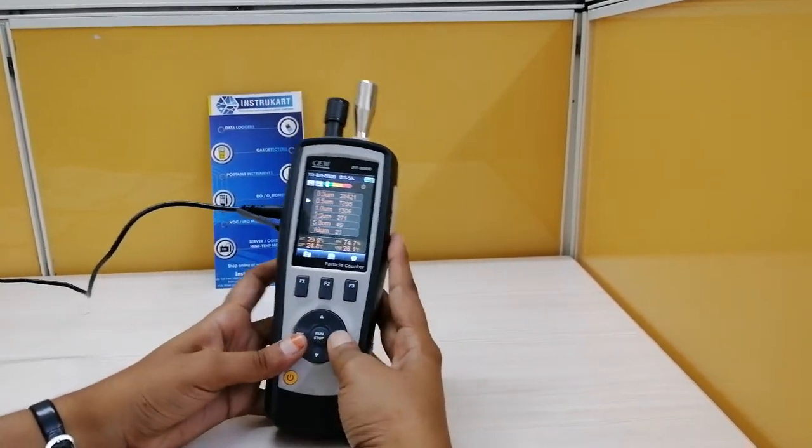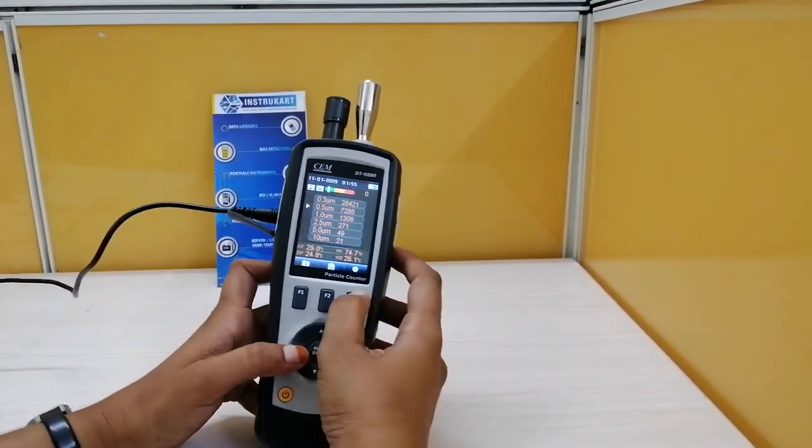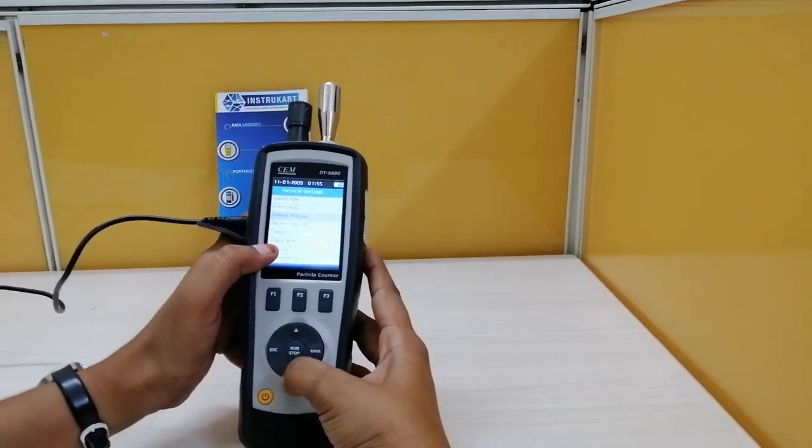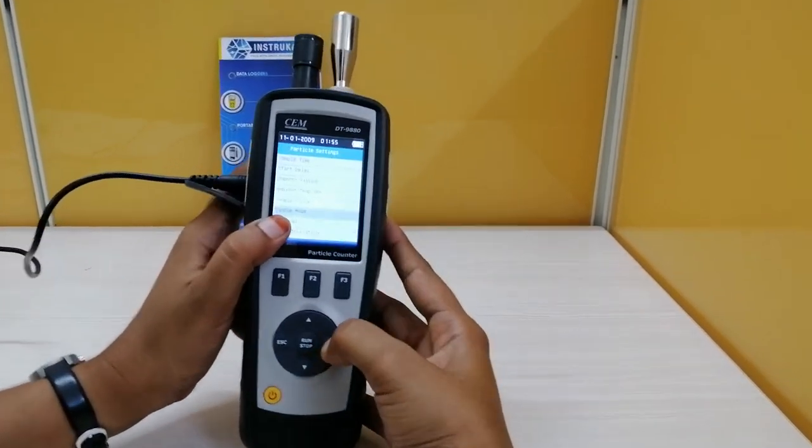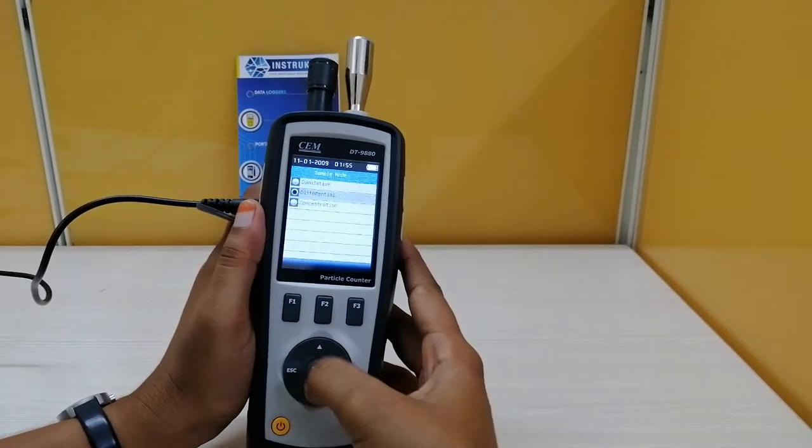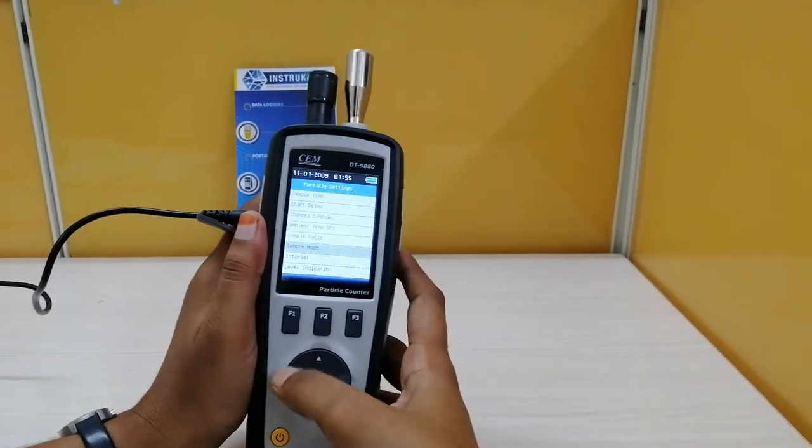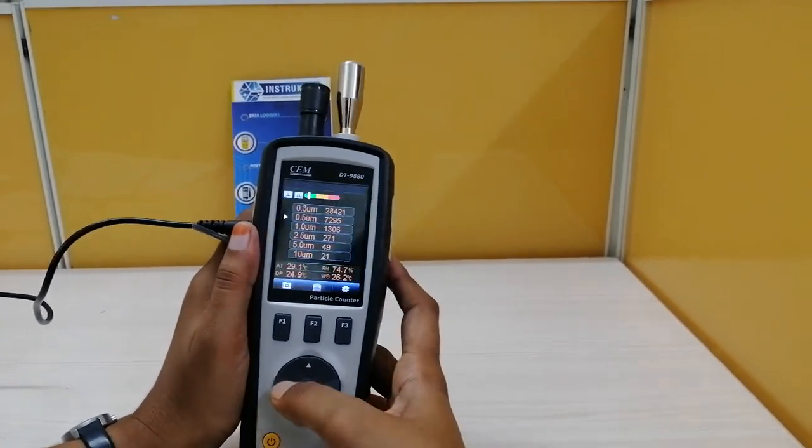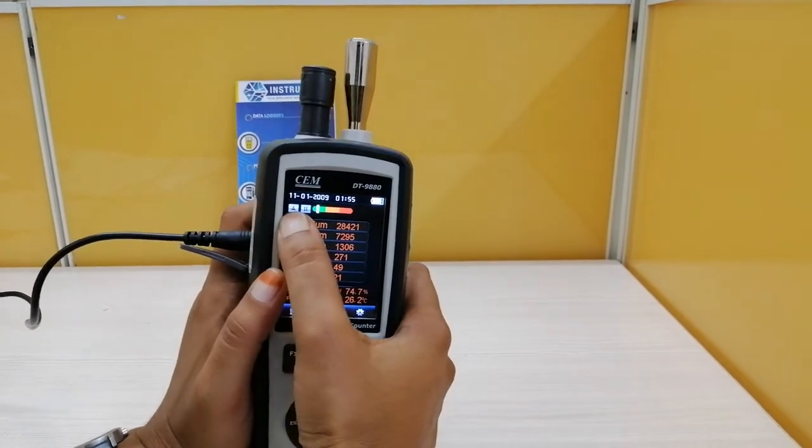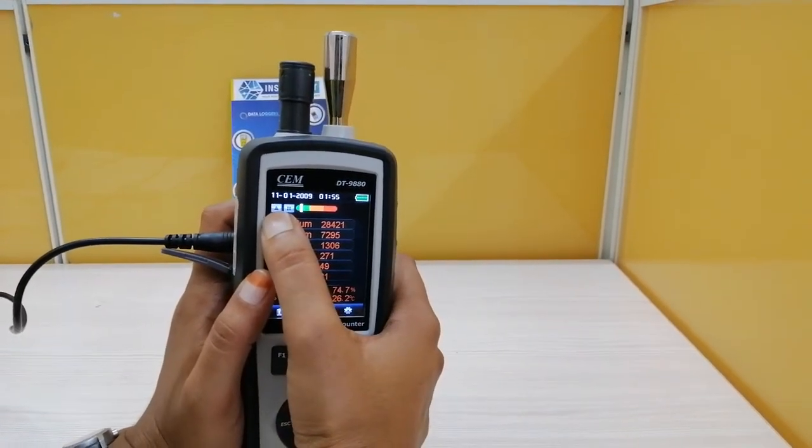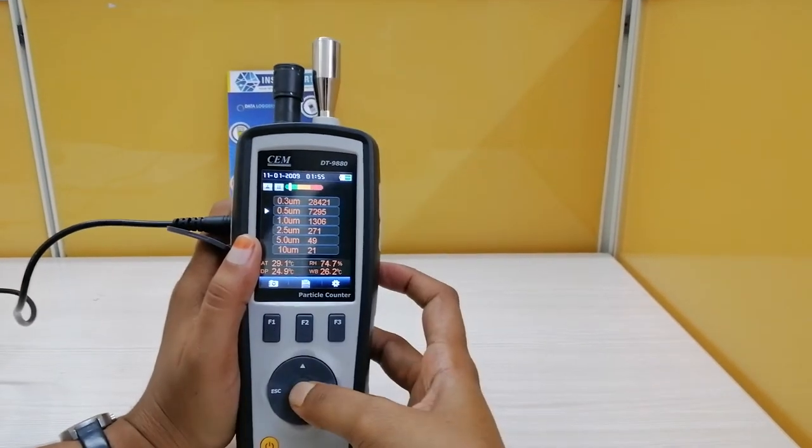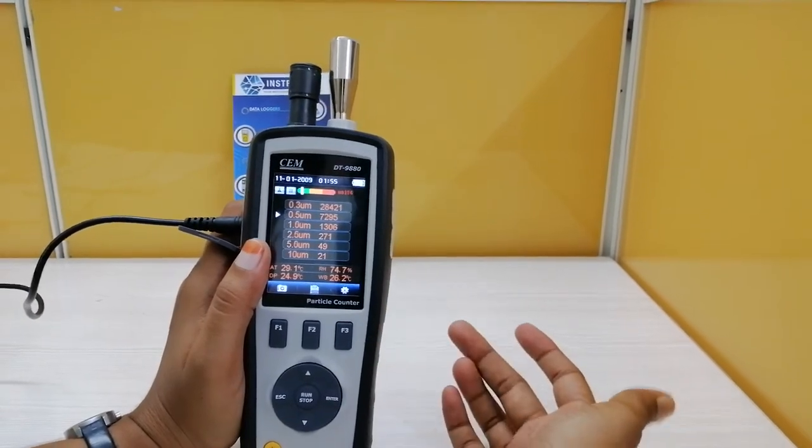I will measure in differential mode. Here you can select the sample mode. Differential. Escape - it means done. Back. Now you can see here, this is the indication that the measuring mode is in differential. Again, I am sampling.